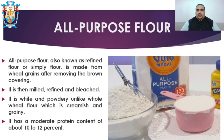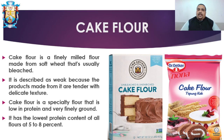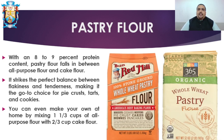Next is cake flour. Cake flour is a finely milled flour made from soft wheat that is usually bleached. It is described as weak because the products made from it are tender with a delicate texture — as cakes need to crumble in your mouth. Cake flour is low in protein and very finely ground, with the lowest protein content of all flours, around five to eight percent.